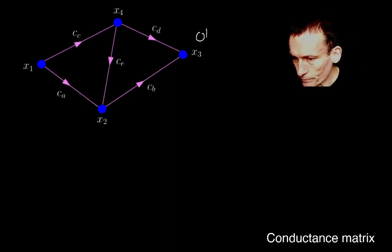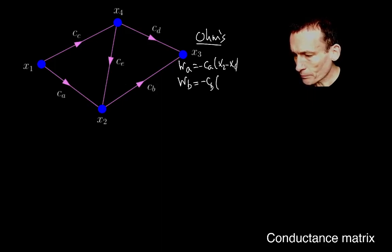Okay, and if you write down Ohm's law, in fact, it's just instructive to just do it once for all of the edges. So minus CA will be X2 minus X1. And then the current, according to Ohm, will be minus CB, X3 minus X2. And then WC.